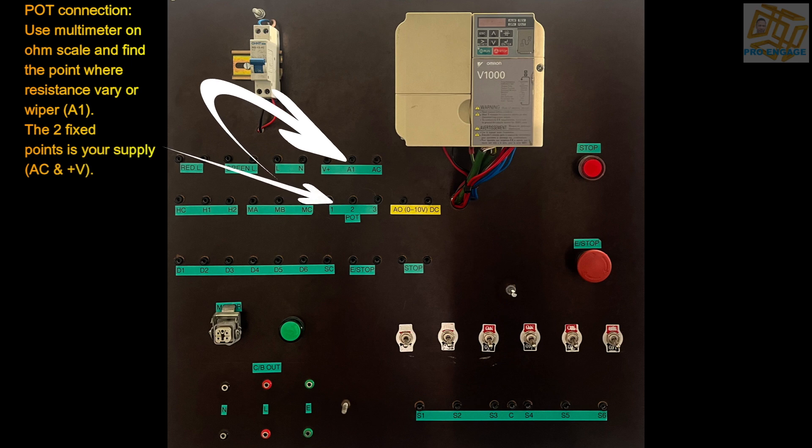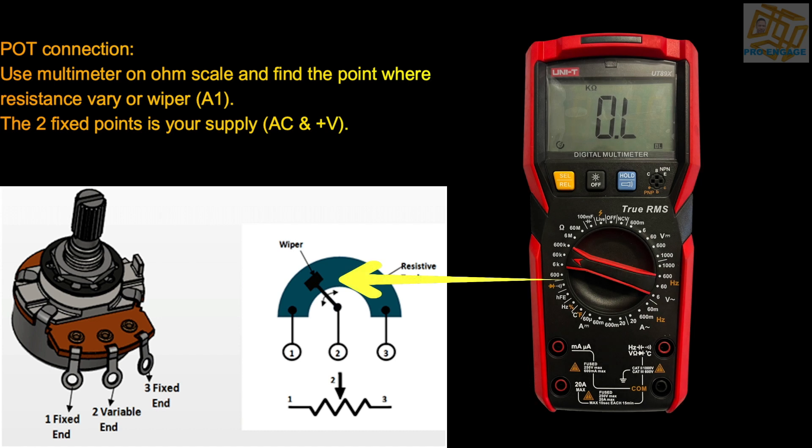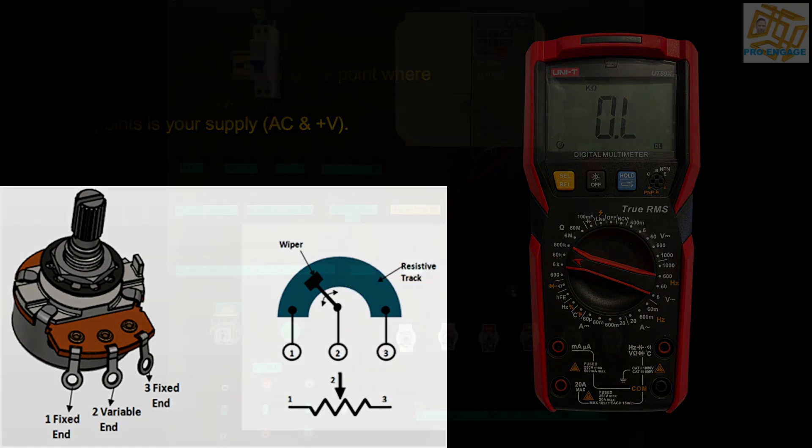For the pot, use the multimeter on the ohm scale and find the point where resistance varies, which is the wiper, and then the two fixed points are your supply.